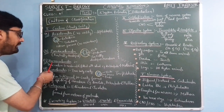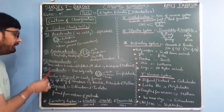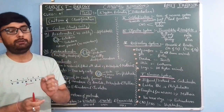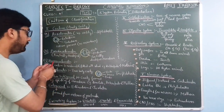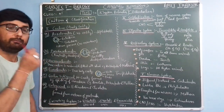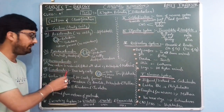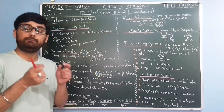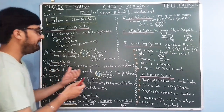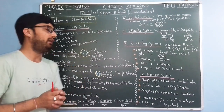Then we have haemocoelomates, which are quite similar to pseudocoelomates. In haemocoelomates, the true coelom — meaning they are generally triploblastic with ectoderm, mesoderm, and endoderm — all three germ layers are present. But in haemocoelomates, the true coelom is reduced, meaning it is filled with blood in the mesodermal region. Like in arthropods and molluscs, a whitish or greyish type of material is present in the middle part or in the cavity.